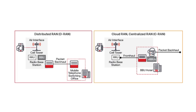On the other hand, RRU is the remote radio unit. It interfaces with an antenna on one end and the BBU on the other. It connects to the BBU through the Common Public Radio Interface and converts radio frequency signals into data signals and vice versa. It also does filtering and amplification of the RF signal.